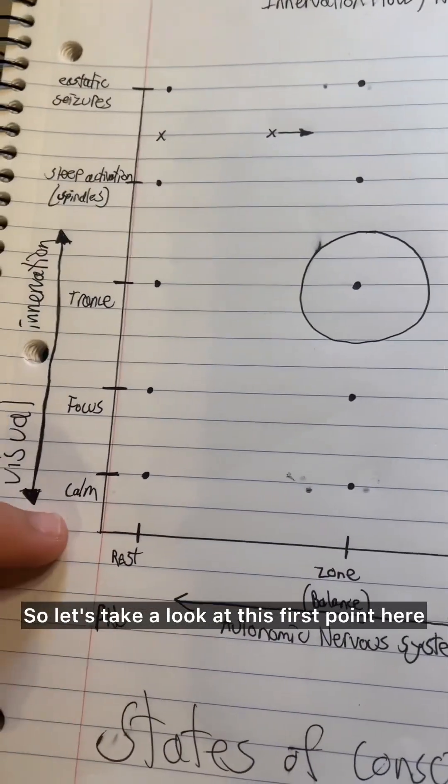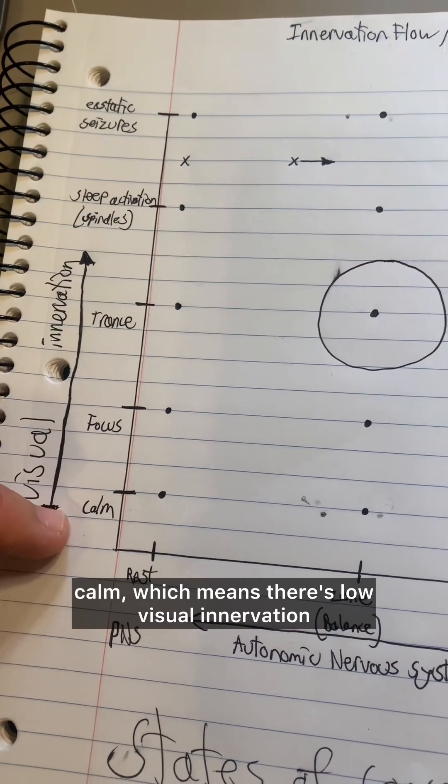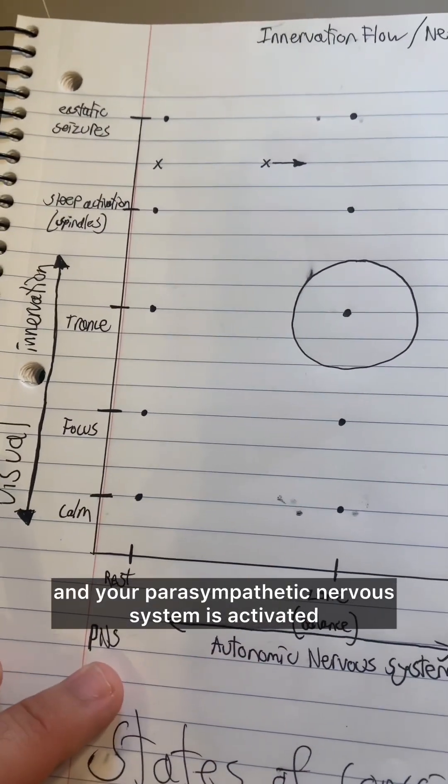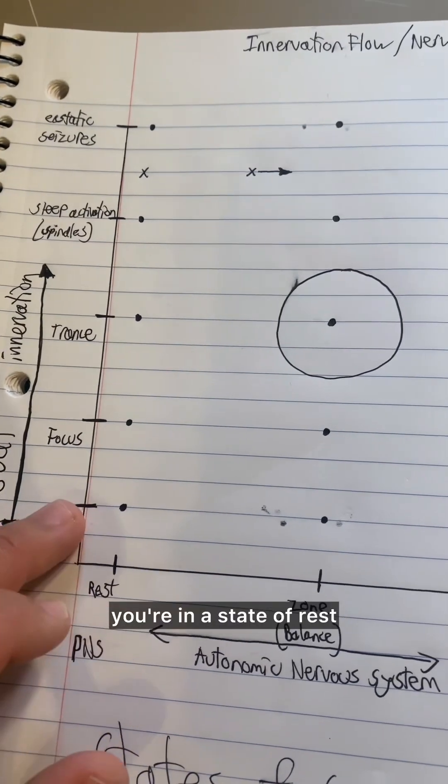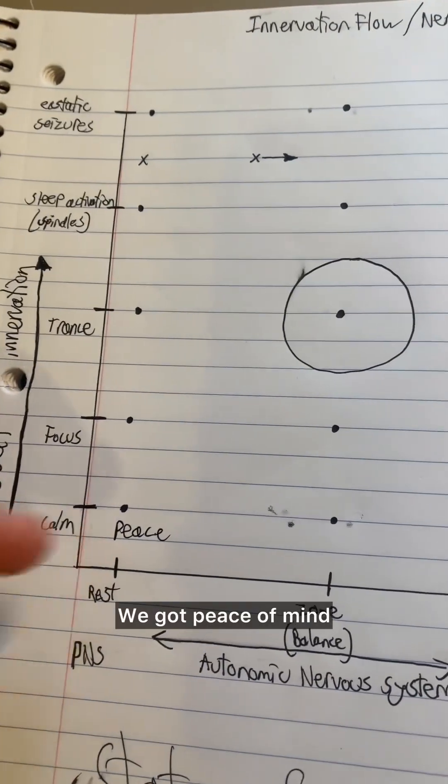So let's take a look at this first point here. When your visual signals are calm, which means there's low visual innervation, and your parasympathetic nervous system is activated, you're in a state of rest. So calm and rest, we can call that peace. We've got peace of mind.